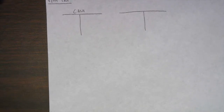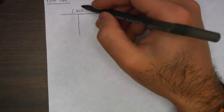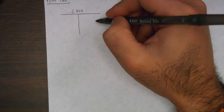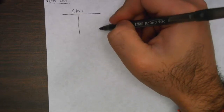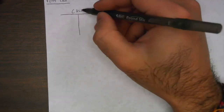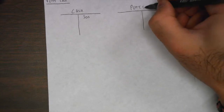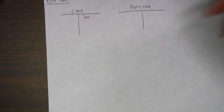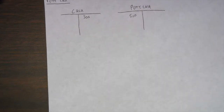When we set up petty cash originally, let's say we set it up for $500. We would credit cash for $500 because we're taking cash out, and then we're setting up this petty cash fund for the first time. So we debit petty cash for $500. That's how we set it up — boom, easy.